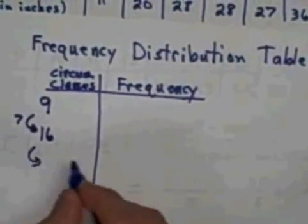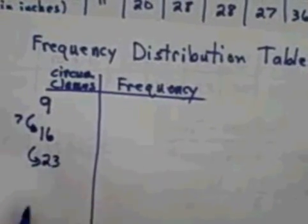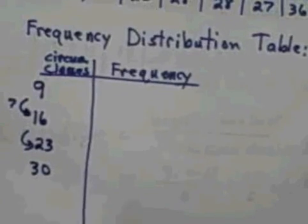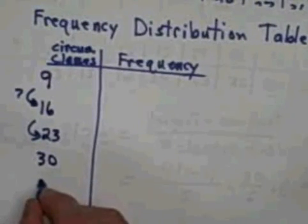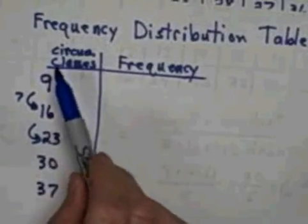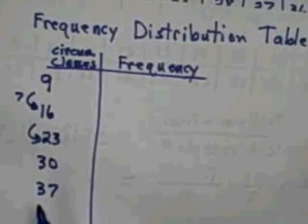The next class, 7 more, is going to start at 23. 7 more, the next one will start at 30. That's four classes, and my last class will start at 37. And once again, these are representing inches, the circumference of the trees.